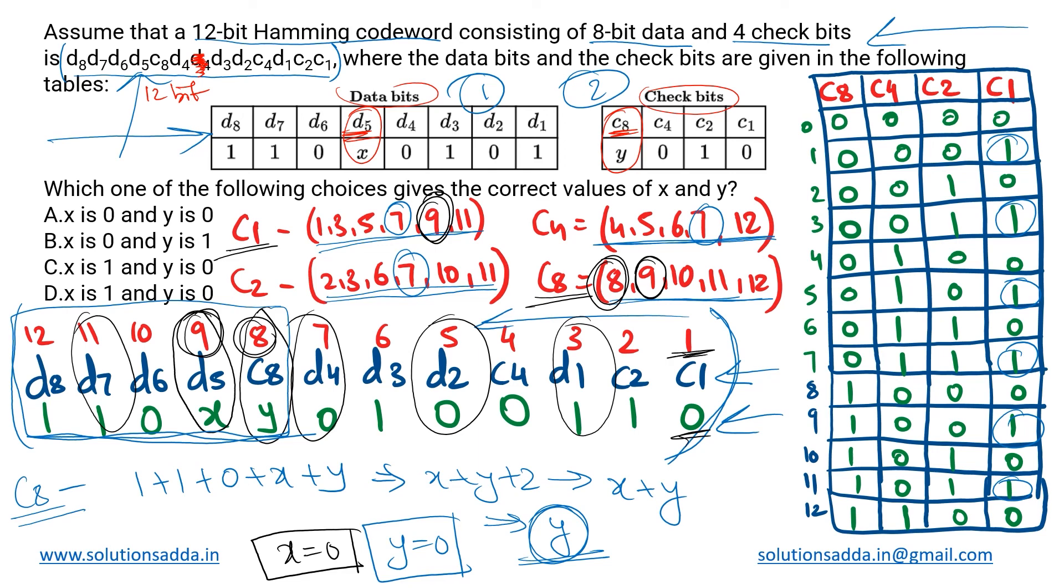What is the option that we are getting? The first one, option A: x is 0 and y is also 0. That will be the answer.